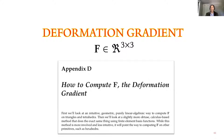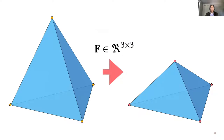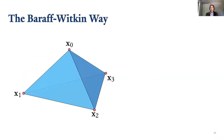F can tell us how much the tet has deformed. Once we know that, the next question is: what forces should appear at the vertices to restore the tet to its original shape? We can do this the Barraff-Witkin way using positions, and then we'll look at how to do it the deformation gradient way — the finite element way.